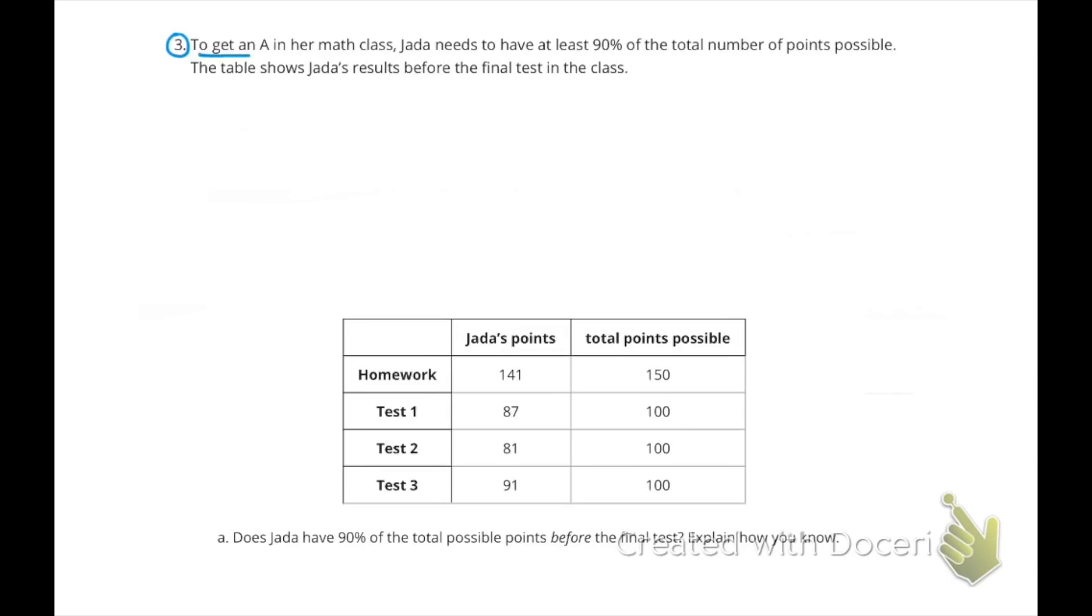Number 3: To get an A in her math class, Jada needs to have at least 90% of the total number of points possible. The table shows Jada's results before the final test in the class. A: Does Jada have 90% of the total possible points before the final test? Explain how you know.